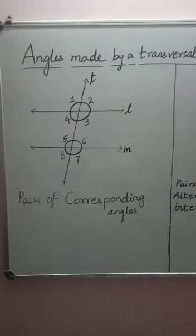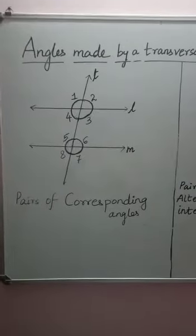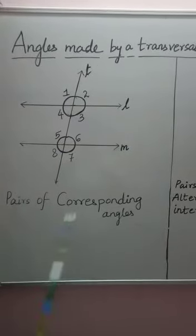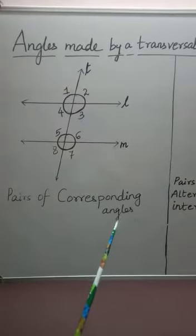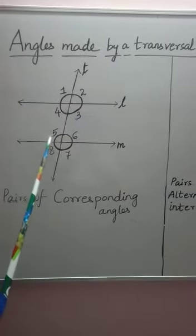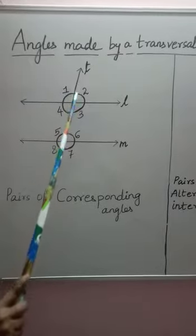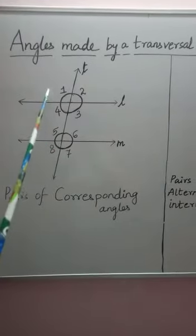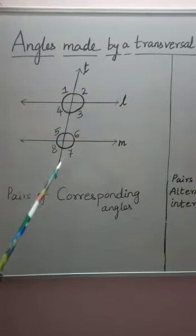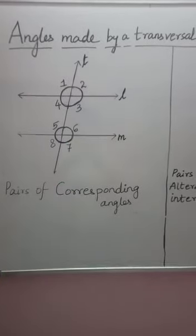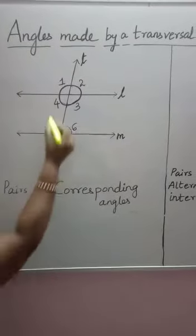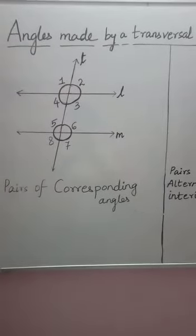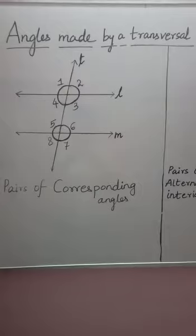Children, let us see the next pair of angles made by a transversal. The next set of angles made by a transversal are corresponding angles. What do we mean by corresponding angles? The angles which are relative to each other — you can see here angle 1 and angle 5, both are relative to each other. They are formed by the transversal with the two lines L and N. So, angle 1 and angle 5 are corresponding angles, forming one pair of corresponding angles.